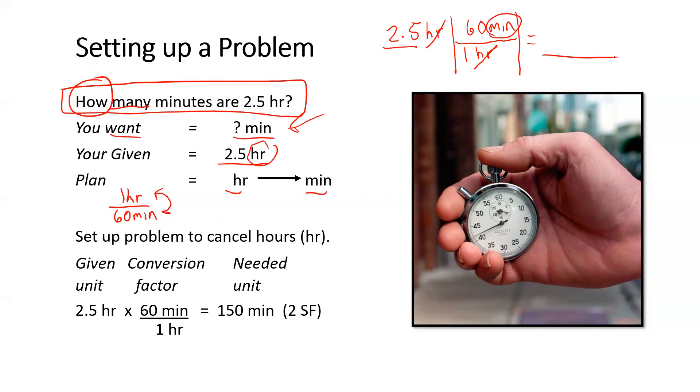So that's what I did right here. The answer, 2.5 times 60 gives me 150. Now does it have the correct sig figs? It does, it has two sig figs. Why are we doing two sig figs? In the problem, 2.5 has two sig figs. Now some people might look at the conversion factor one hour, 60 minutes, and say well there's only one sig fig. But we're treating those equalities as exact numbers.